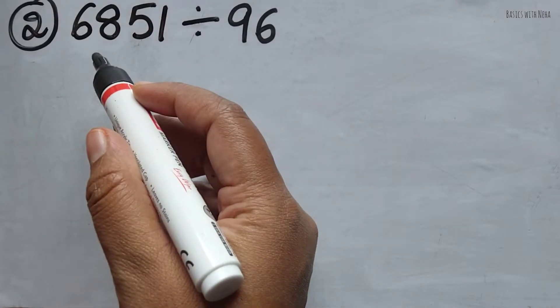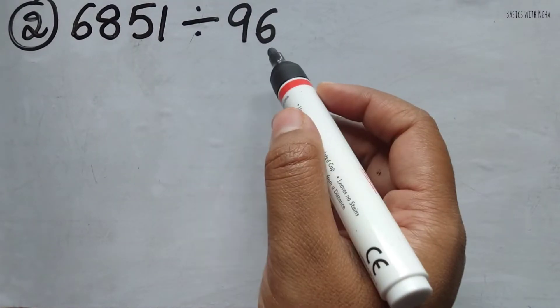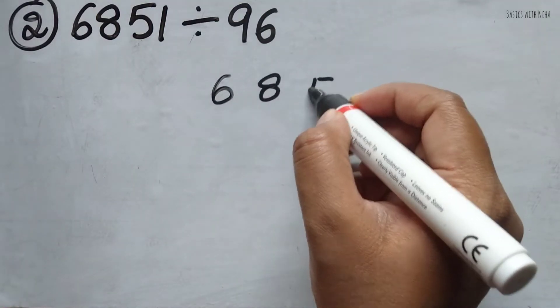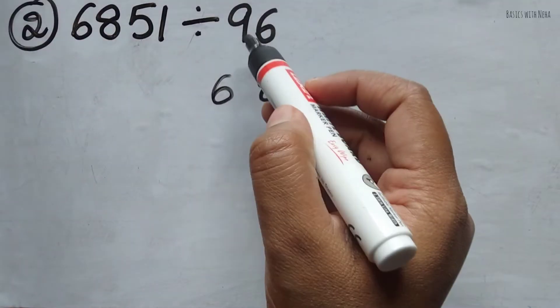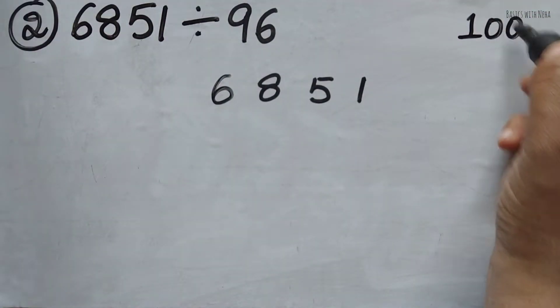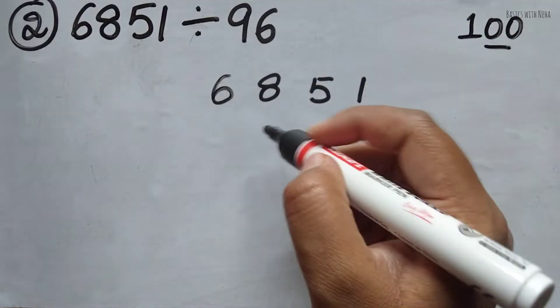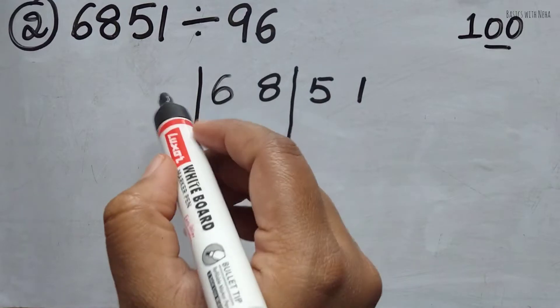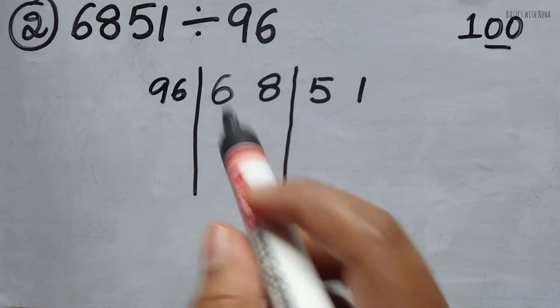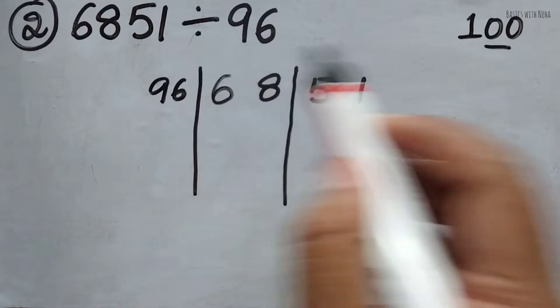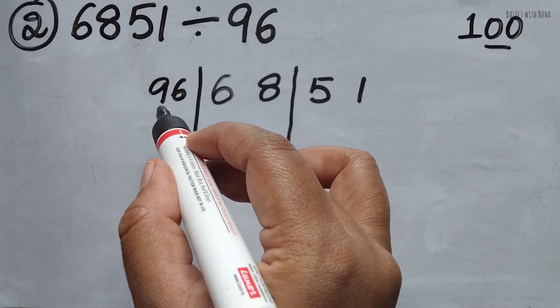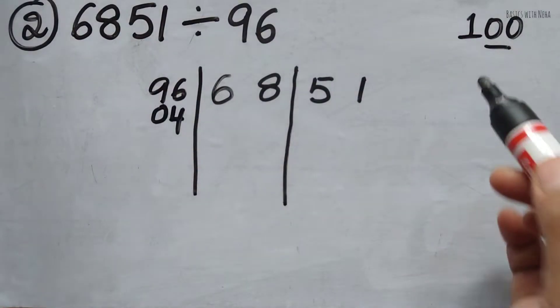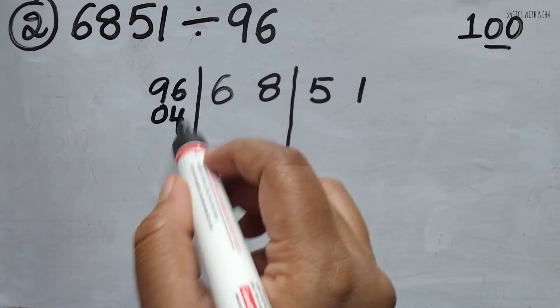The second question, 6851 divided by 96. First, write the dividend part that is 6, 8, 5, 1. The base value that I can take is 100. So how many zeros do I have? I have two zeros. So I'm going to just split this number, leaving the two numbers. And here I'm going to write the divisor. So what should I add to this divisor to get 100? I add 4. But here you have to take it as 0, 4, because two zeros, two numbers should be there.